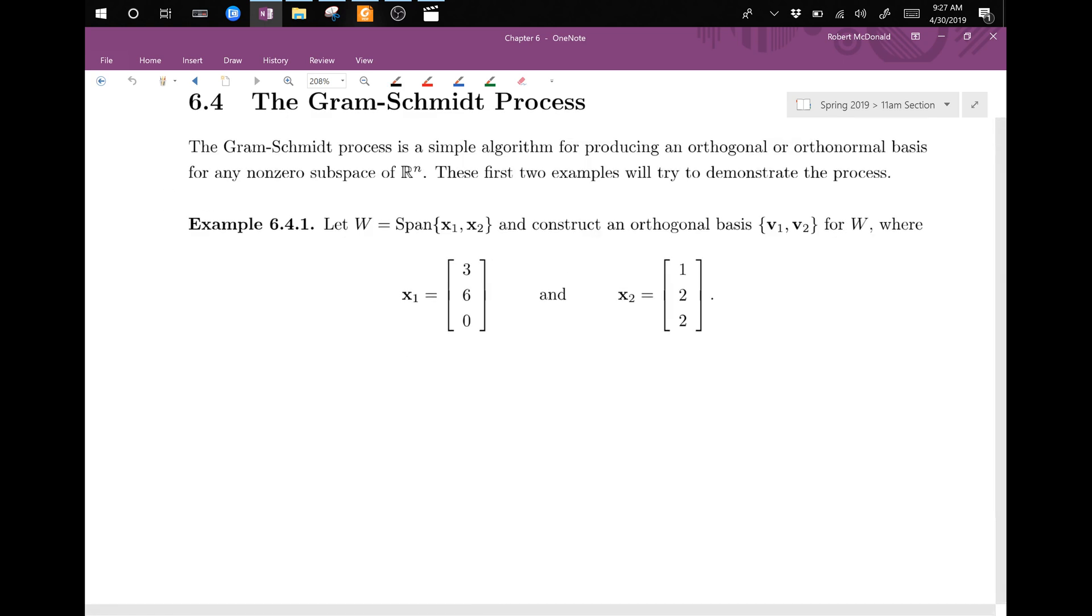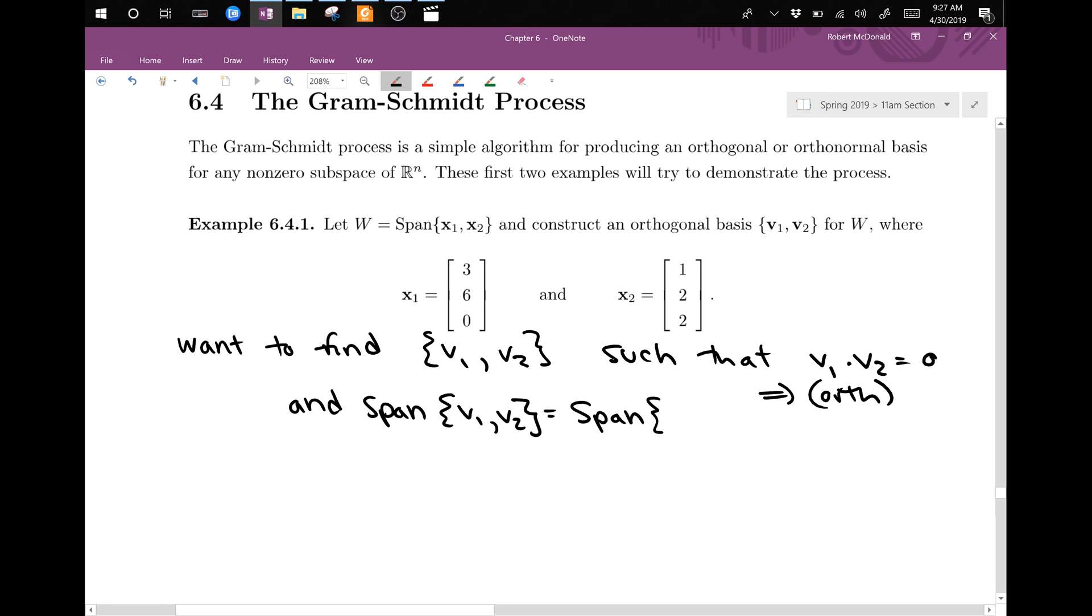And what we want to find, we want to find two vectors v1 and v2 such that v1 dot v2 is equal to 0 (that will imply orthogonal), and also the span of v1, v2 is equal to the span of x1, x2. And so that's the whole point.